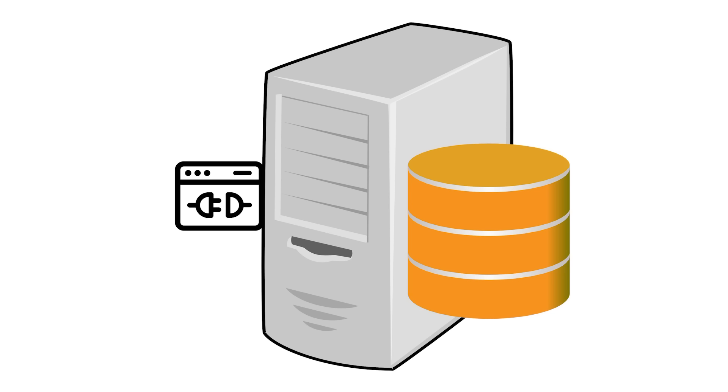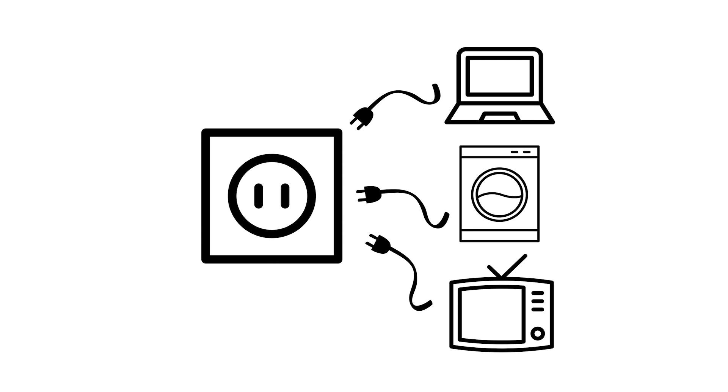Before we get our hands dirty, let's make sure we understand the basics. If you are new to APIs, here is a very quick introduction. An API is essentially an interface to a server that has some data or does some actions. To understand the concept of an interface, think about any power outlet you have in your home. It does not matter which device you want to power — your laptop, a washing machine, or a TV. The outlet on the wall is designed to accept any plug following a predefined specification.